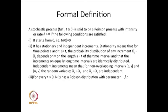Formally we define the Poisson process as follows. A stochastic process N(t), t ≥ 0, is said to be a Poisson process with intensity or rate λ > 0 if the following conditions are satisfied.